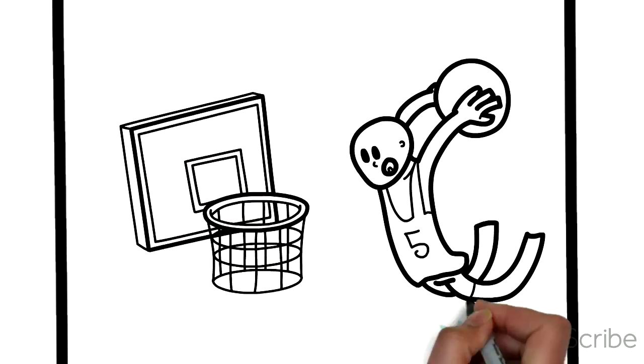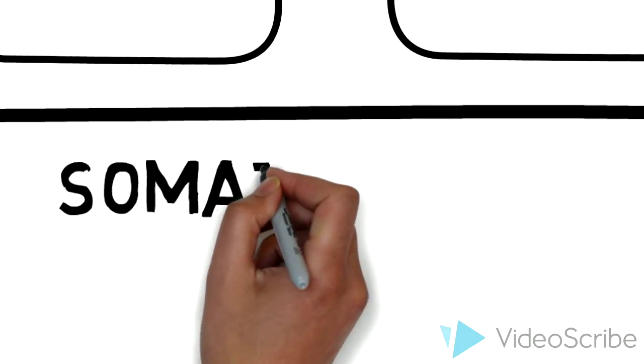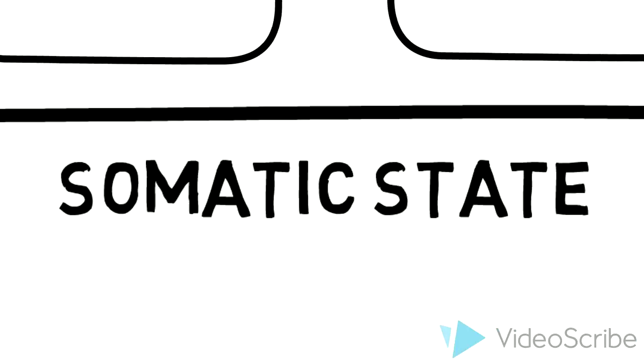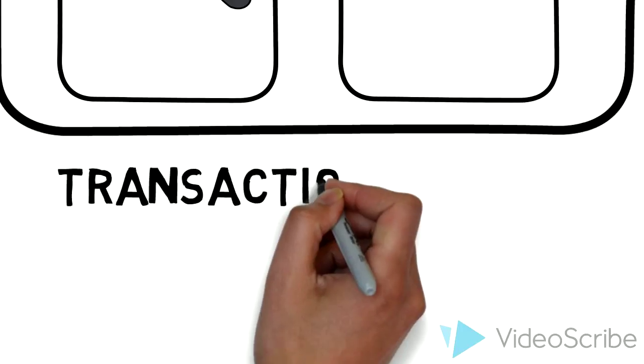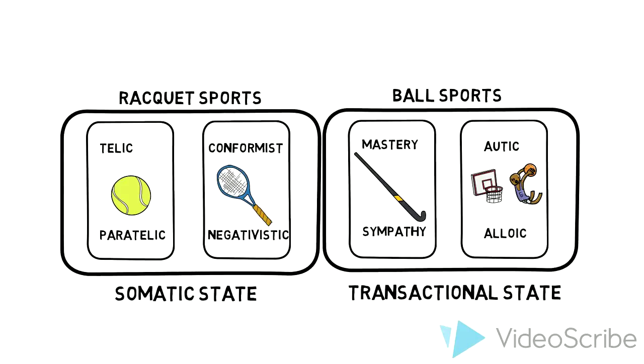This means that any combination of teams from different courts can be dominating their opponents at the same time. In terms of reversal theory, the competing teams are called metamotivational states. The racket sports stadium represents the somatic states, where an athlete experiences their own bodily arousal, and the ball sports stadium represents the transactional states, wherein athletes interact with others and/or objects. Each sport represents a pair of metamotivational states, either of which can be dominant at any point in time, alongside those of the other sports.